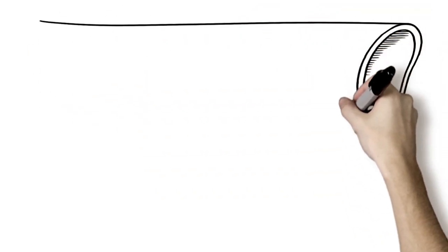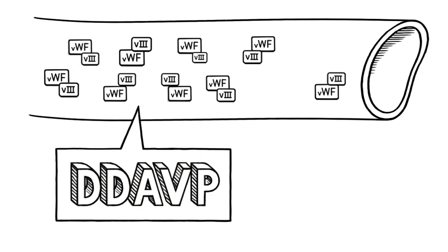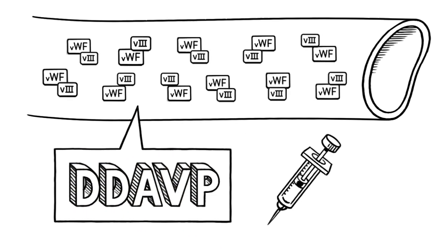Treatment for VWD depends on the type and severity. The most common treatment, DDAVP, boosts factor levels in the blood. It can be taken by injection or nasal spray.